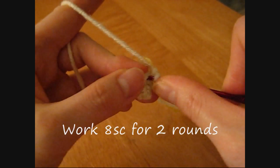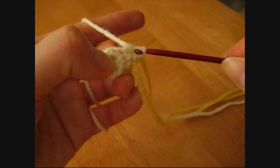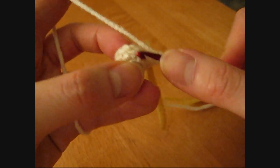For this next row, do 1 single crochet in each of the 8 stitches. Do this again for the next row. So you should end up with 8 stitches at the end.